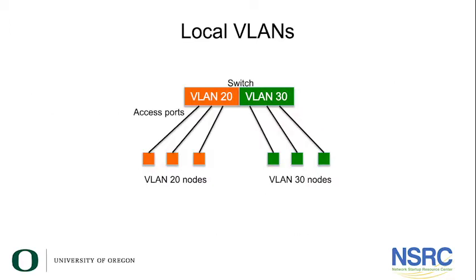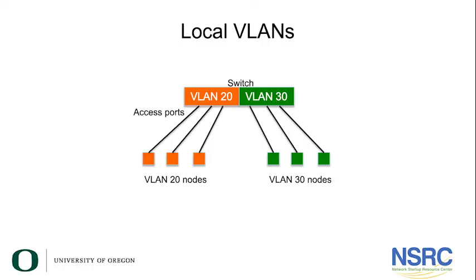Let us look at what it looks like in a diagram. We have a simple switch with two VLANs. The orange or amber VLAN is VLAN 20, and the green VLAN is VLAN 30. In each of these VLANs, we have three end nodes configured as access ports. The VLAN 20 nodes can only send traffic to other VLAN 20 nodes — they cannot send traffic to VLAN 30 nodes. This switch behaves as if you have two different switches: an orange switch and a green switch.